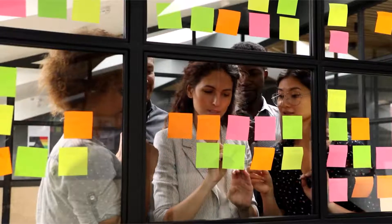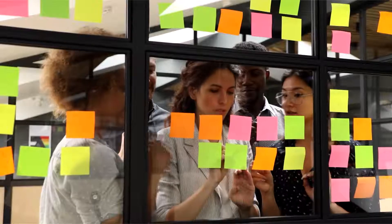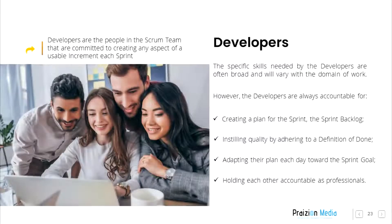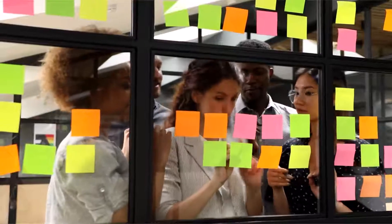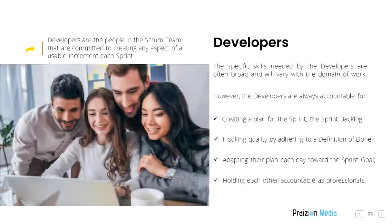However, the developers are always accountable for creating a plan for the sprint, the sprint backlog, instilling quality by adhering to a definition of done, adapting their plan each day towards the sprint goal, and holding each other accountable as professionals.